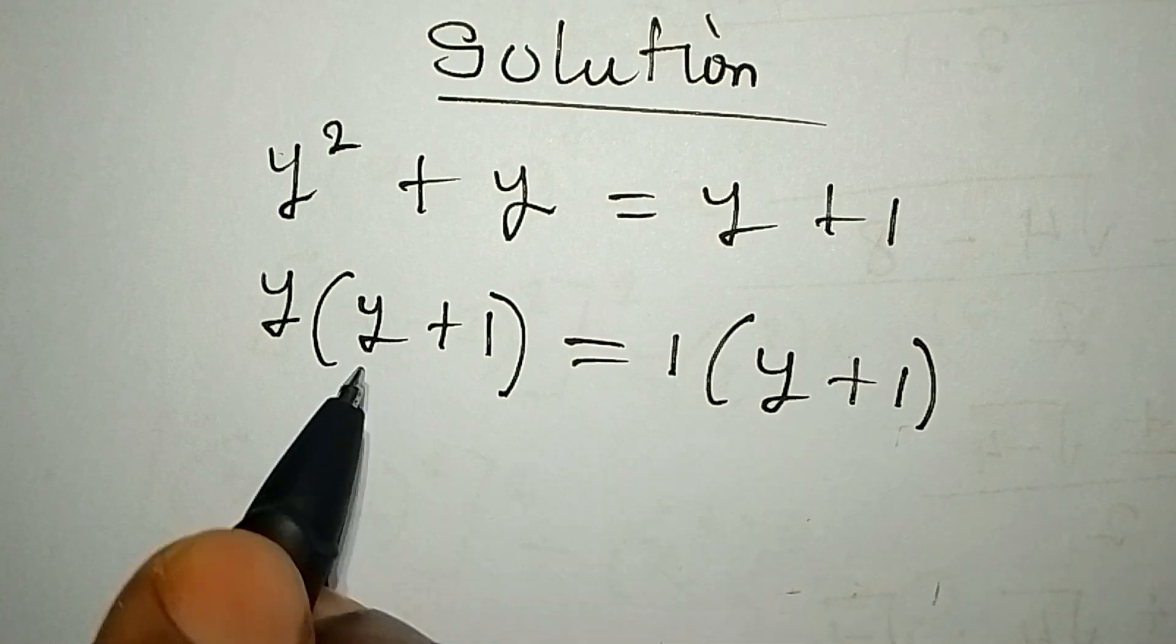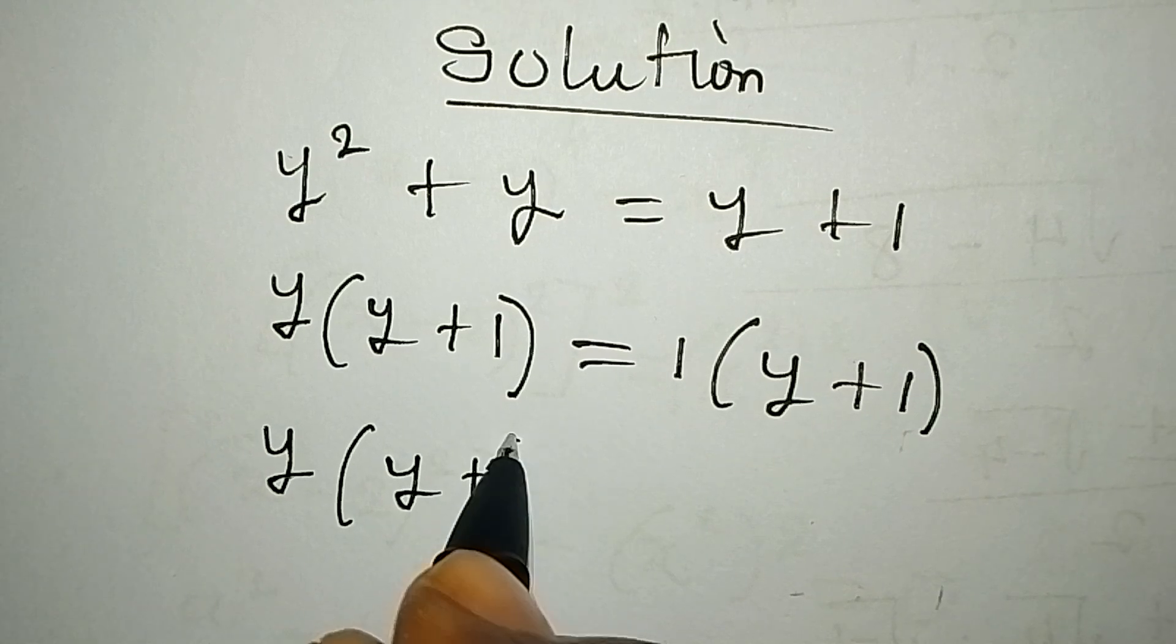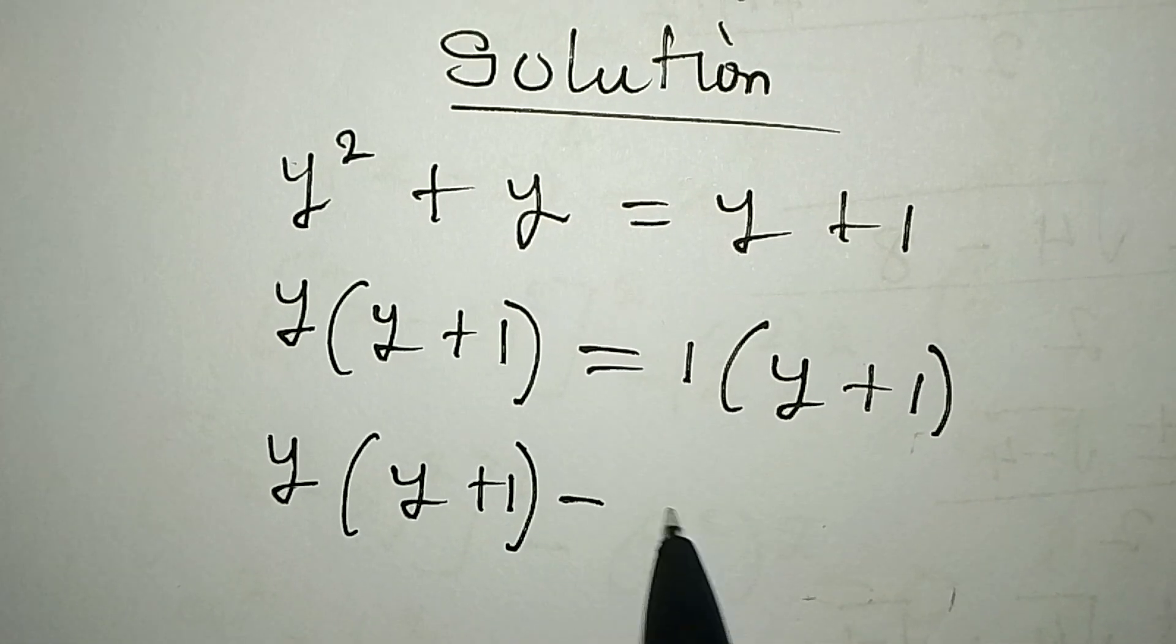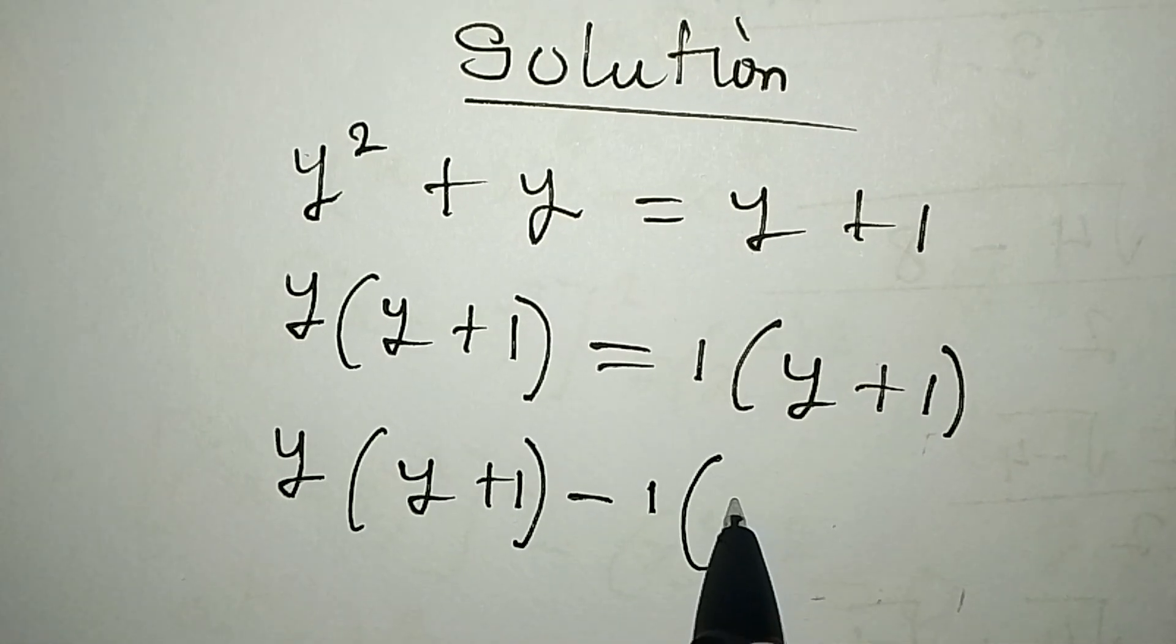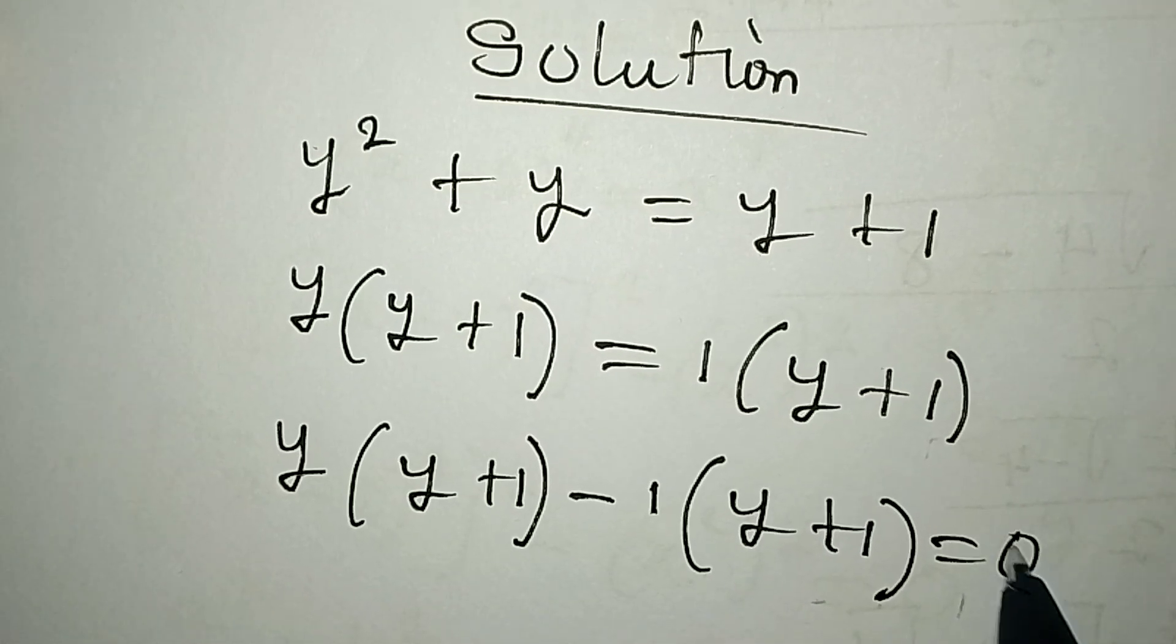Why don't I bring both terms to the same side? So I have y times y plus one, minus one times y plus one, and this equals zero.